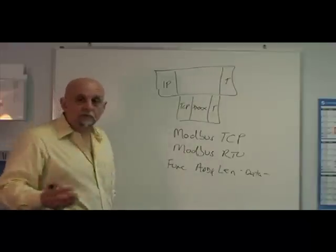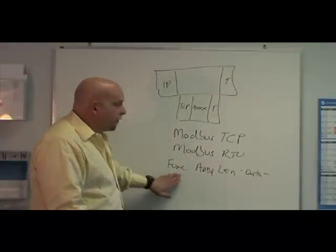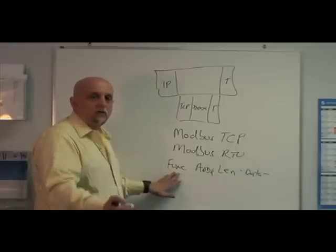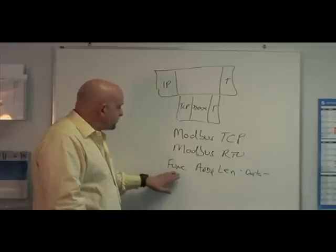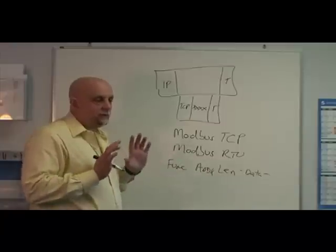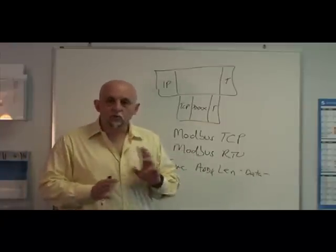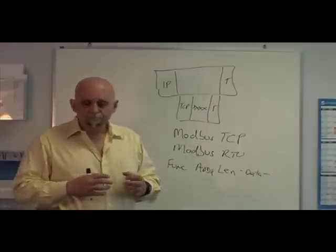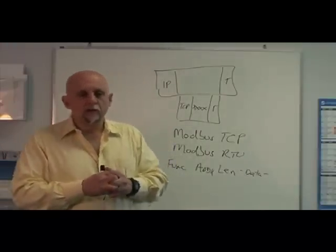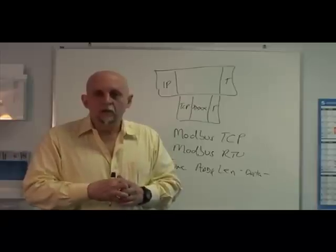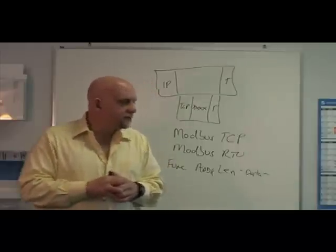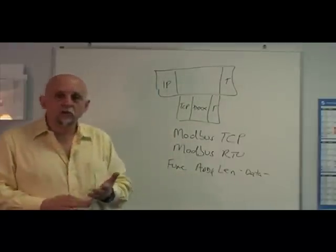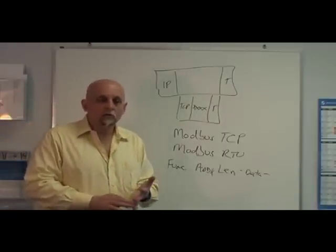The function code says I am reading registers, I'm writing registers, I'm reading coils, I'm writing coils, and there's different sets of registers and coils you can have. This goes back to the old days when they actually had real analog inputs and then you had inputs that were in memory and such and stuff like that. So function code, there are some function codes to read input registers, other function codes to read holding registers.